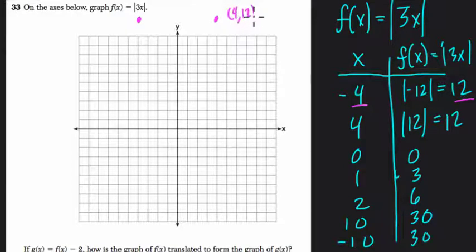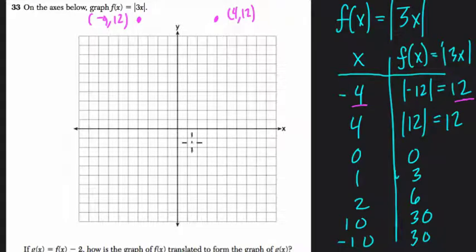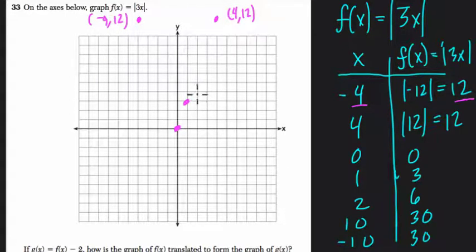Label the point negative four comma twelve — we might not use that for our official graph. Zero comma zero is next, then one comma three, two comma six, and so forth. That gives us a good sense of the shape of the graph. Points ten comma thirty and negative ten comma thirty are not going to fit, but we know they would go way up the graph.